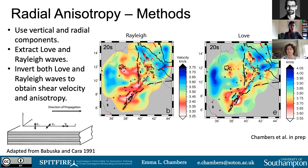To show you what the phase velocities look like: red colors indicate slower velocity and blue colors indicate faster velocity. Slower velocities in red can be caused by changes in composition — more felsic compositions — increases in temperature, and also from the presence of fluids. In contrast, faster blue colors are caused by more mafic compositions, lower temperatures, and a lack of fluids.